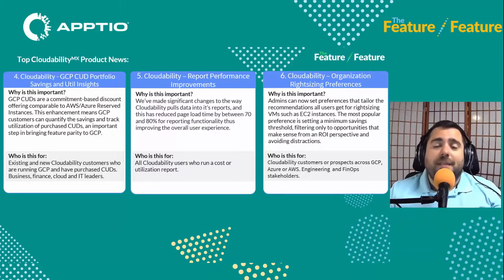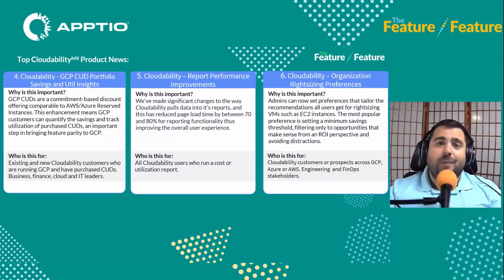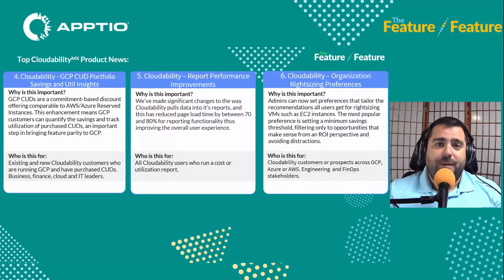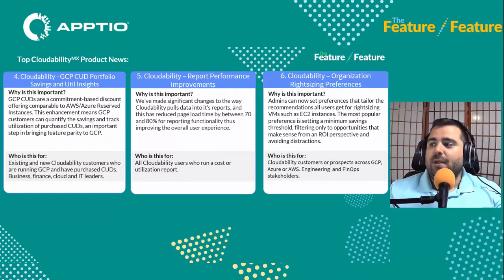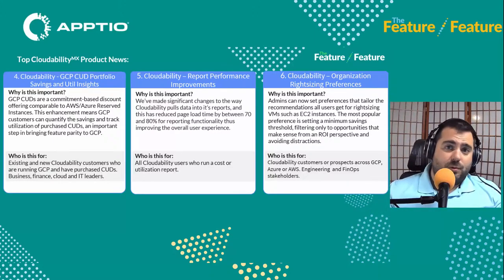GCP is increasingly being adopted by our customers and people in the industry. As Google makes more datasets and information available via their APIs, we are including them in Cloudability as quickly as we can. There have also been significant report performance improvements in Cloudability — we got that feedback from customers that some reports weren't loading as quickly as they'd like. We have reduced that page load time by between 70 and 80 percent, making some structural improvements to the way Cloudability is pulling from those APIs.